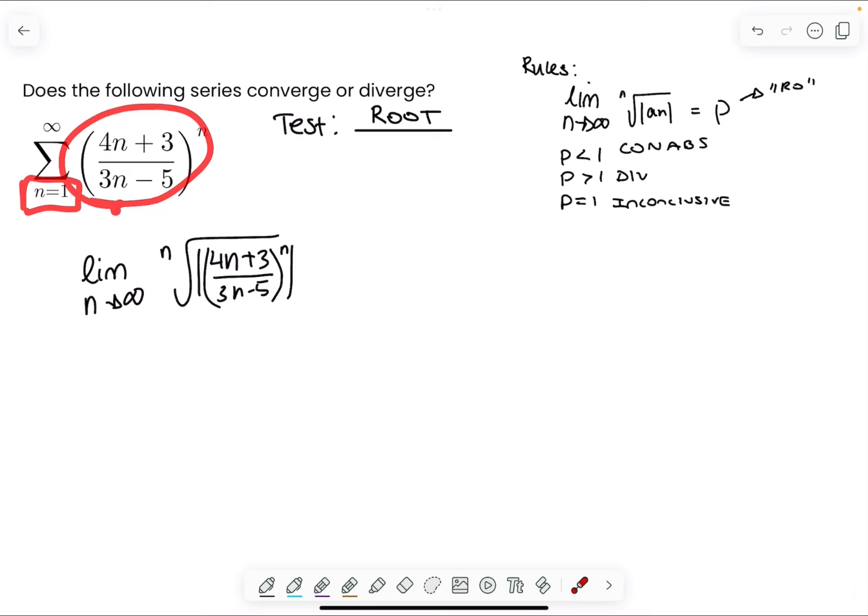So adding the absolute value really does nothing, because the absolute value of something that's already positive is still positive. And now, I note that this is to the n, I take the nth root, these cancel out, and I'm just left with a sequence.